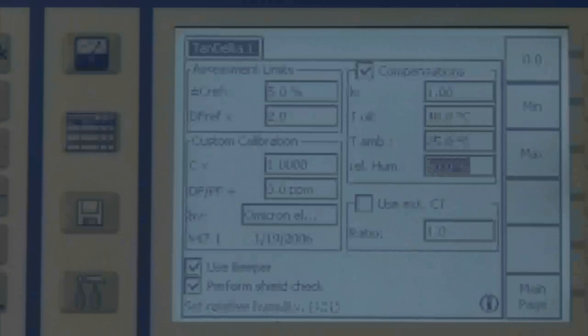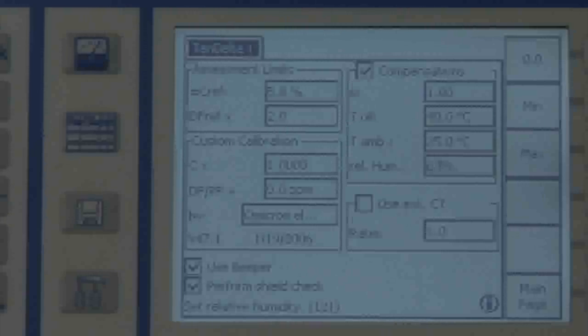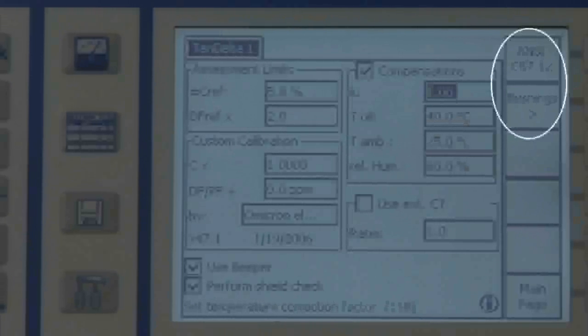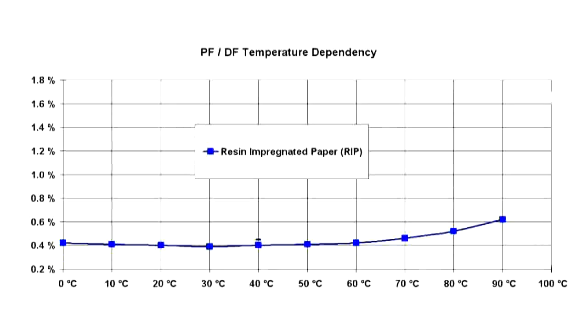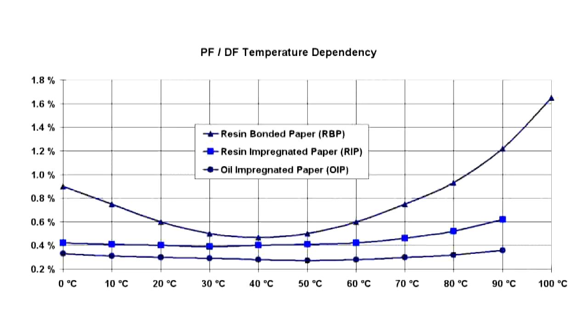If the oil temperature and the ambient temperature are entered, the unit automatically determines the suitable correction factor. Different insulating materials can be selected, including resin impregnated paper, resin bonded paper, or oil impregnated paper.